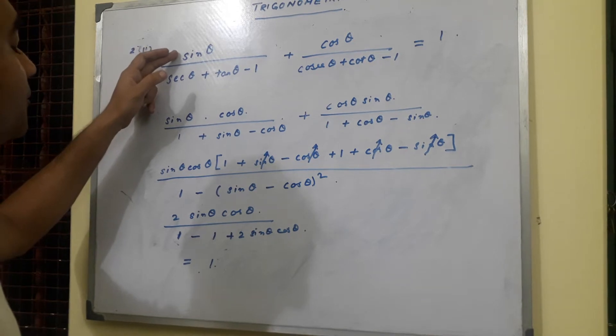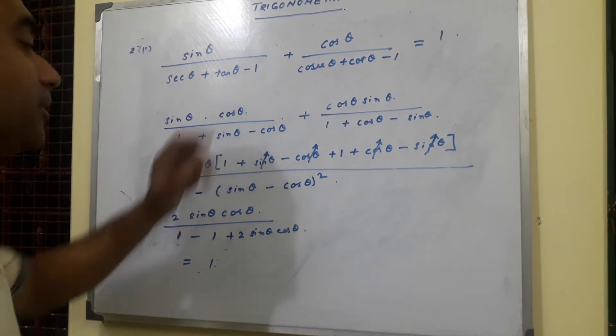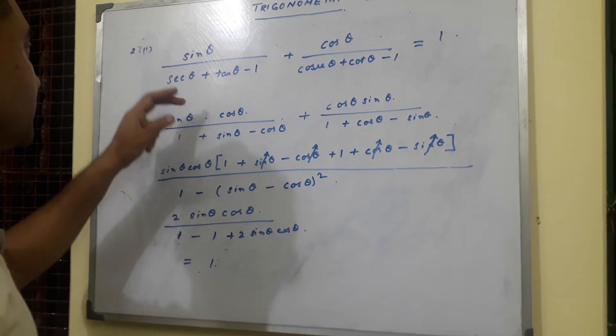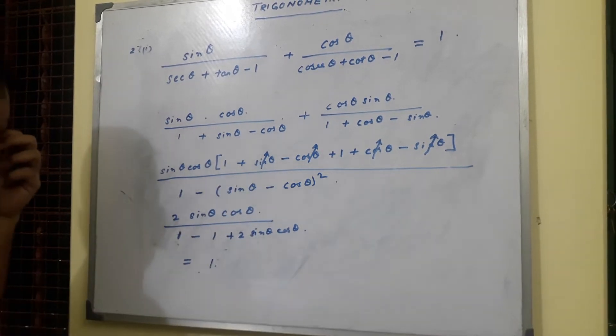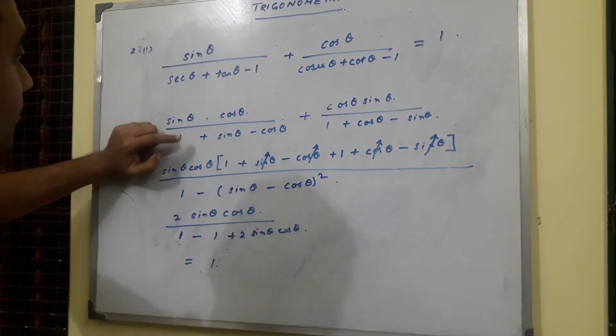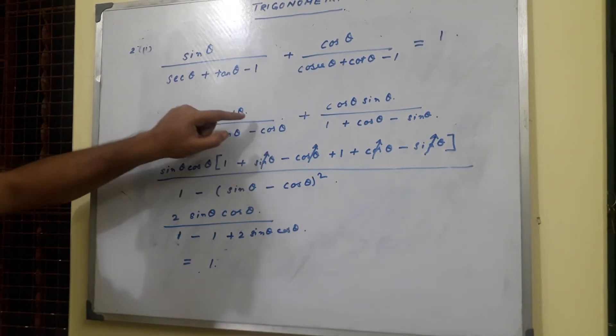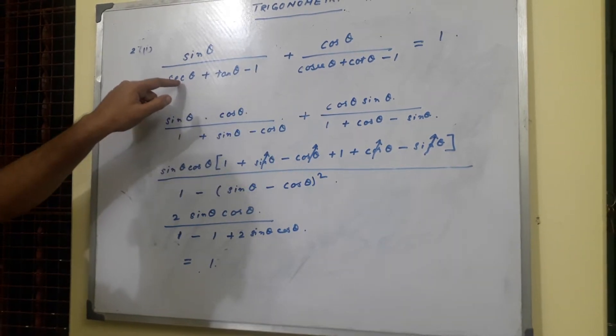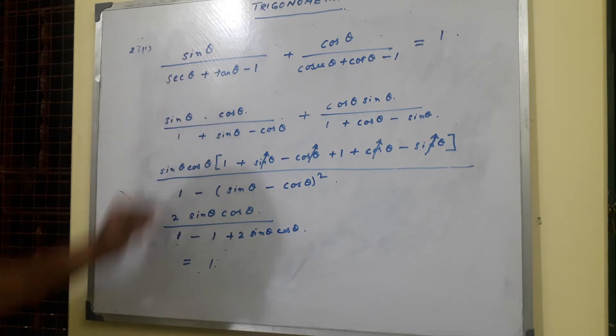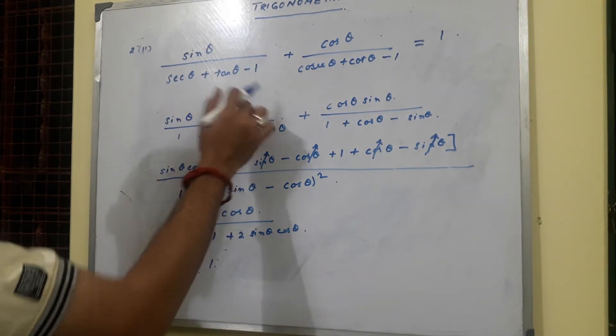First, the first term: sin theta by sec theta plus tan theta minus 1. The denominator can be broken down as 1 plus sin theta minus cos theta and cos theta of this 1 by sec theta, which is 1 by cos theta, and tan theta sin theta by cos theta becomes cos theta.